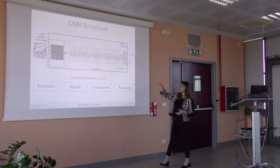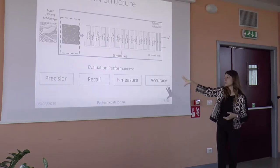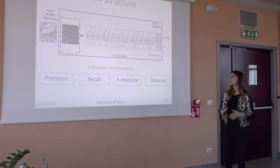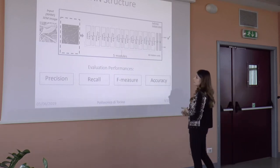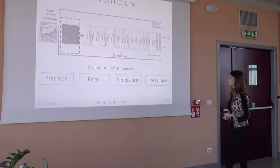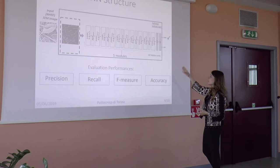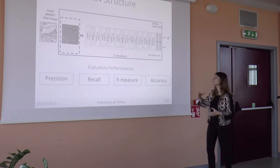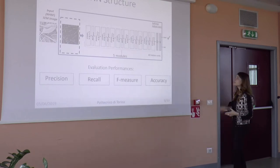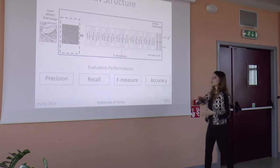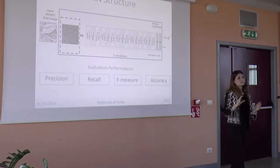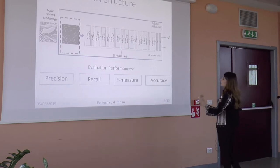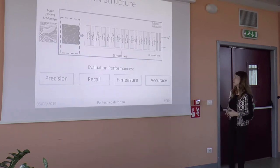Here is my convolutional neural network structure. It is composed of five modules. In each module, there are a convolutional layer, an activation layer, and a pooling layer. After the modules, there is a fully connected layer of 30 hidden units, and at the end a softmax output layer, which discriminates whether the image is a non-homogeneous or homogeneous nanofibers image.